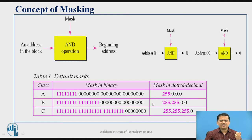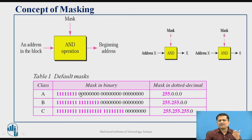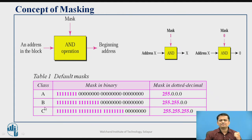These are the standard or default masks for Class A, Class B, and Class C. In Class A, the network ID is present in the first byte, so all first-byte bits are made one in the mask and all other bits are made zero, resulting in a mask of 255.0.0.0. These are the default masks for classful IP representation for Class A, Class B, and Class C.